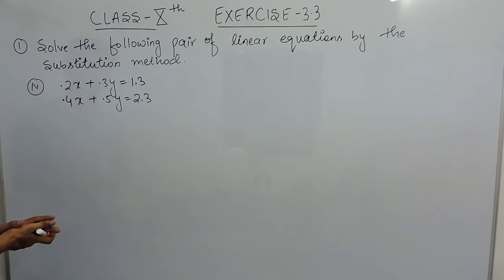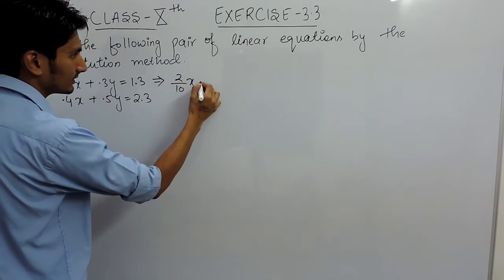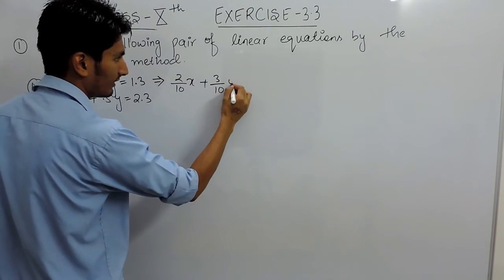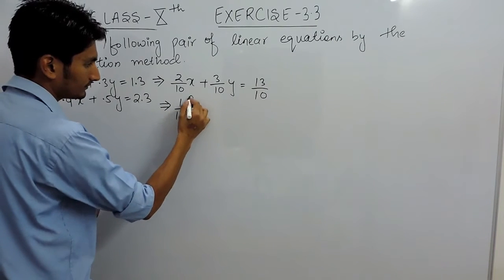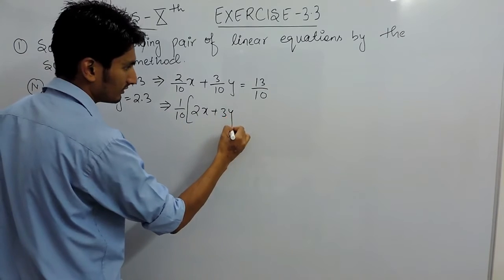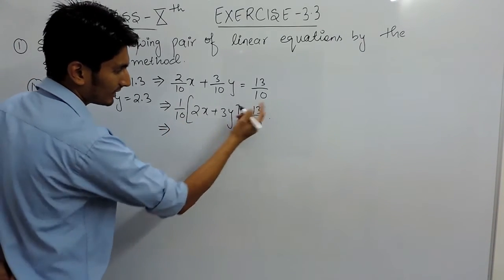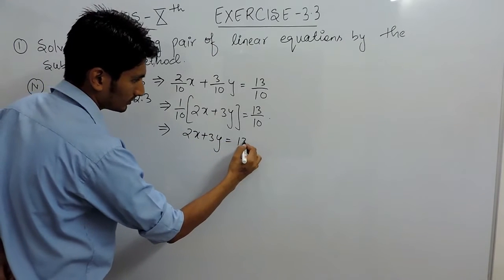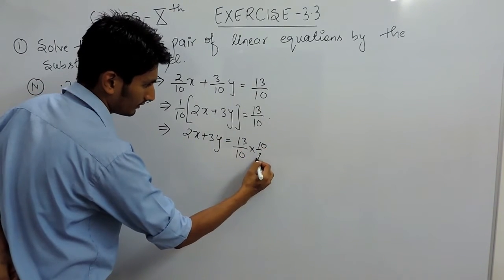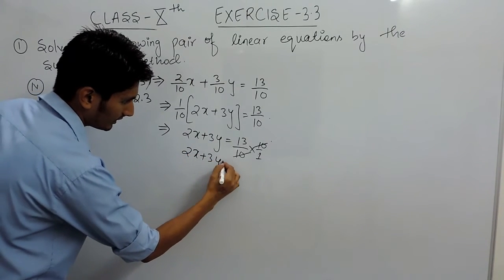First of all, these equations are in decimal, so convert them into simple linear equations. I can write this as 2 upon 10x, this as 3 upon 10y, and this as 13 upon 10. After that you can take 10 common, giving 2x plus 3y equals 13 upon 10. When we shift the 1 upon 10 to the other side, the 10s cancel out, so this equation becomes 2x plus 3y equals 13.